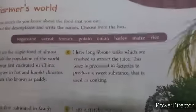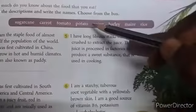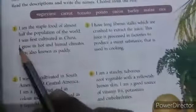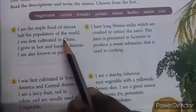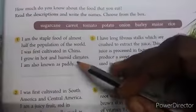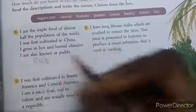Let's move on to the second chapter name — it is Farmer's World. Here we are going to see about the food that we eat. By reading the description, you try to choose the answer for the given description. The first one: I am the staple food of almost half of the population of the world. I was first cultivated in China. I grow in hot and humid climates. I am also known as Paddy. The answer is Rice.